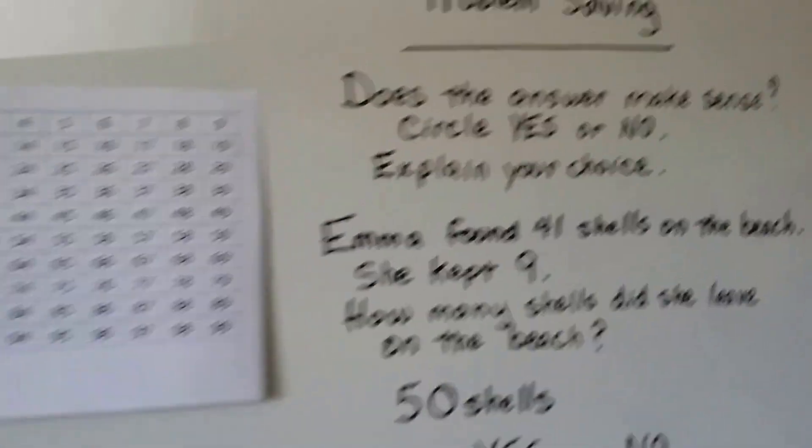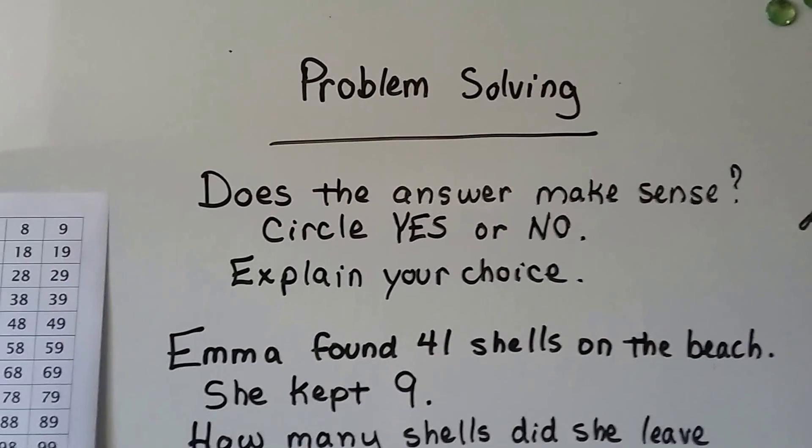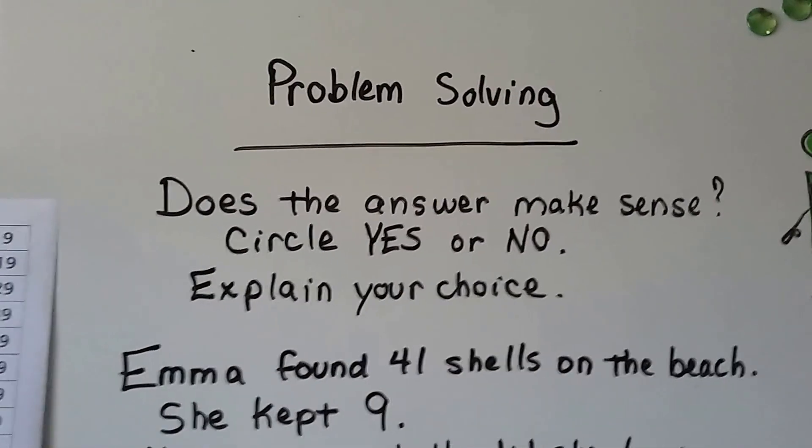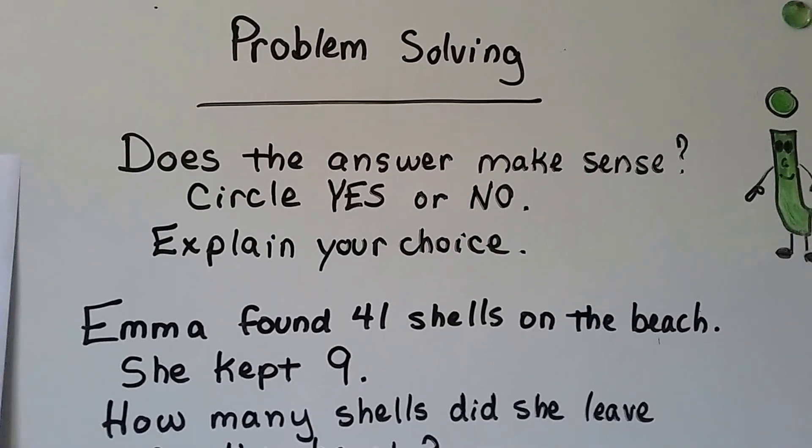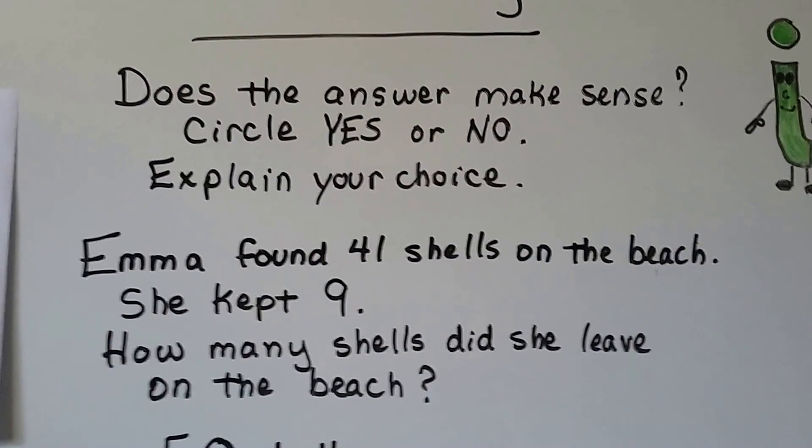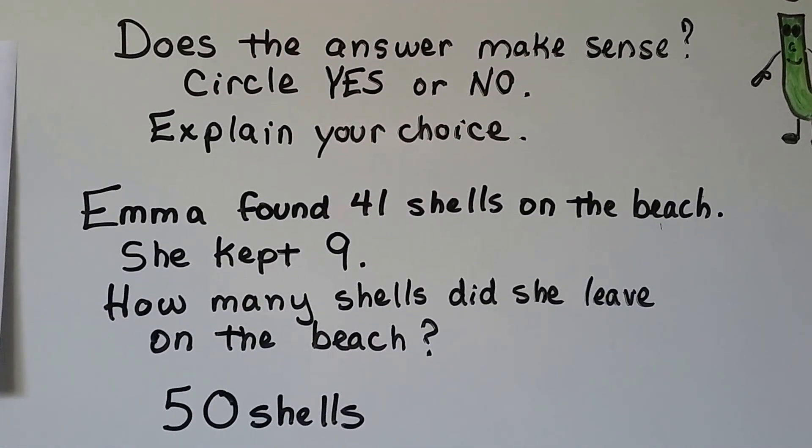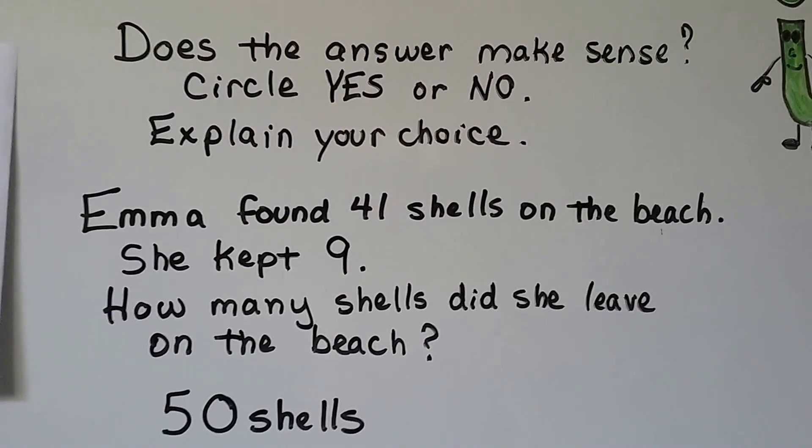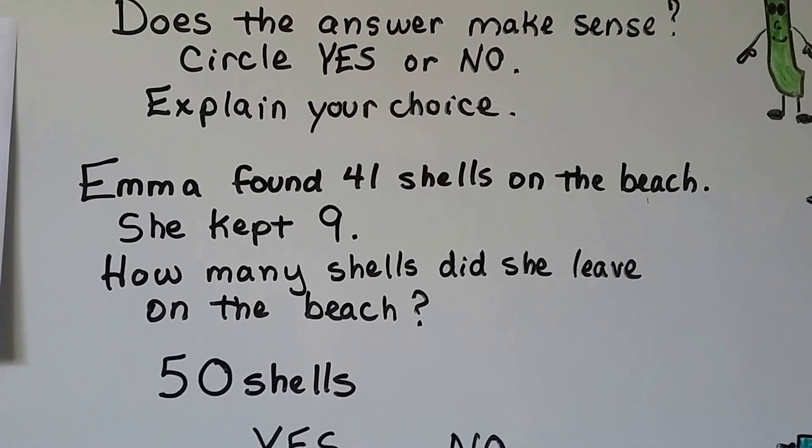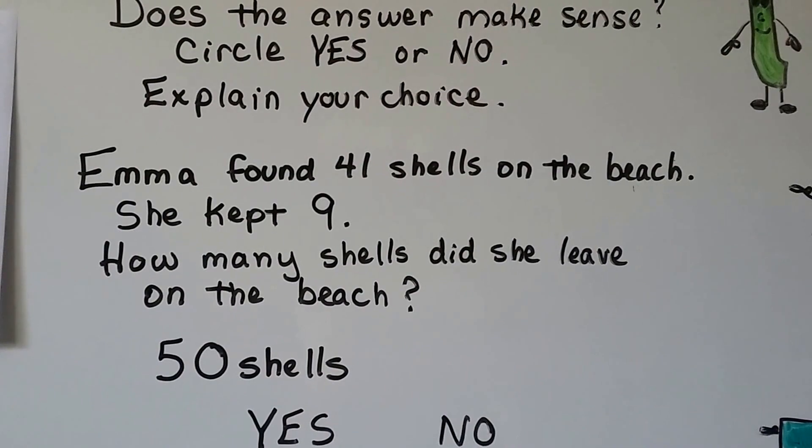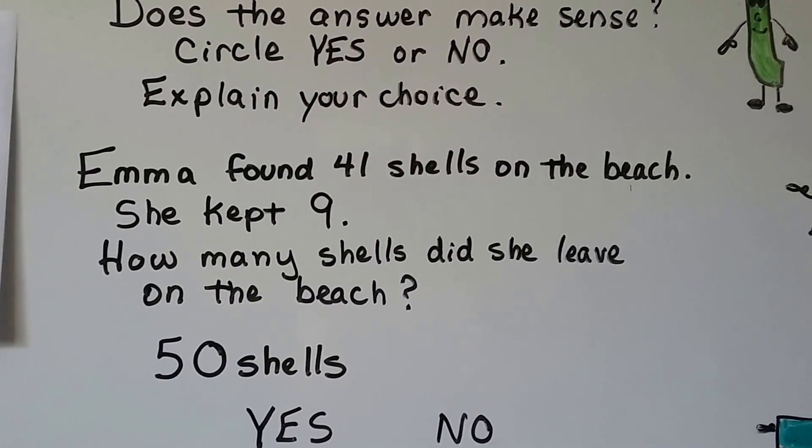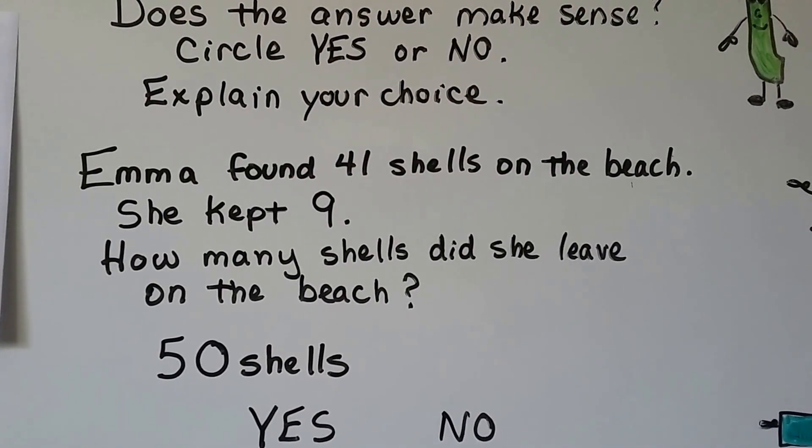Let's try some problem solving. Does the answer make sense? We need to circle yes or no and then explain our choice. Emma found 41 shells on the beach. She kept nine. How many shells did she leave on the beach? It says 50 shells. Does that make sense? Yes or no?